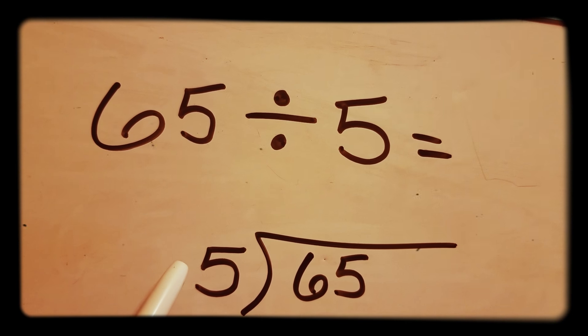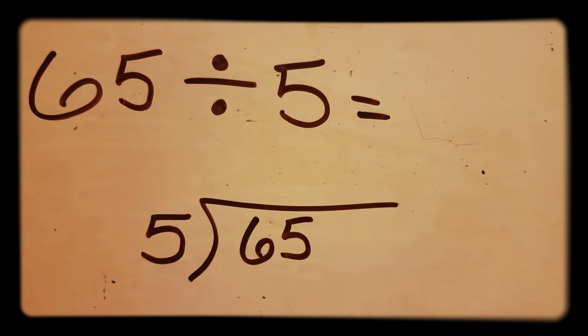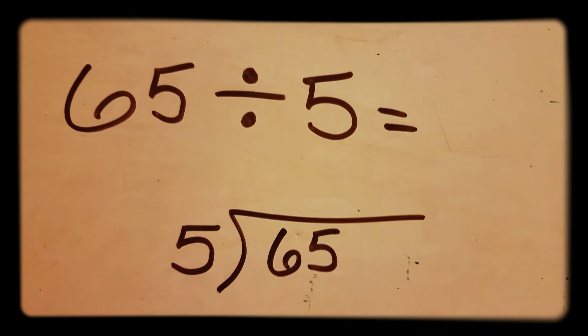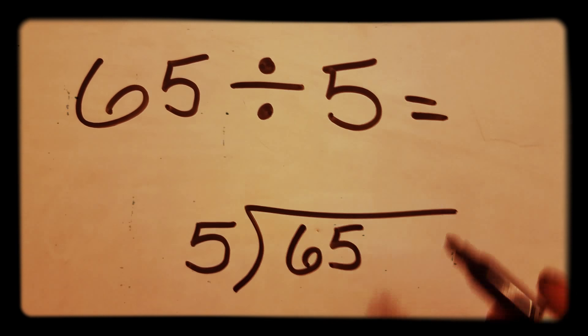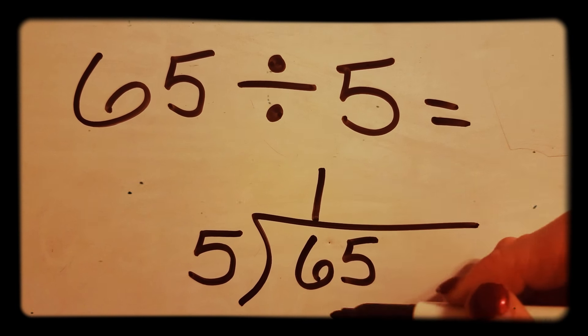First thing you want to do is see how many times 5 goes into 6. It can only go in one time, so you want to put the 1 directly over the 6.